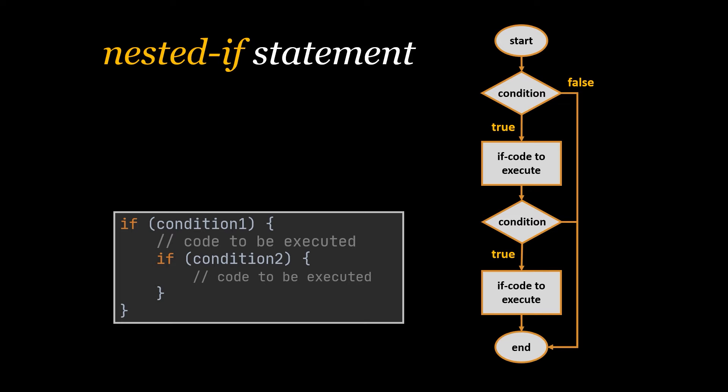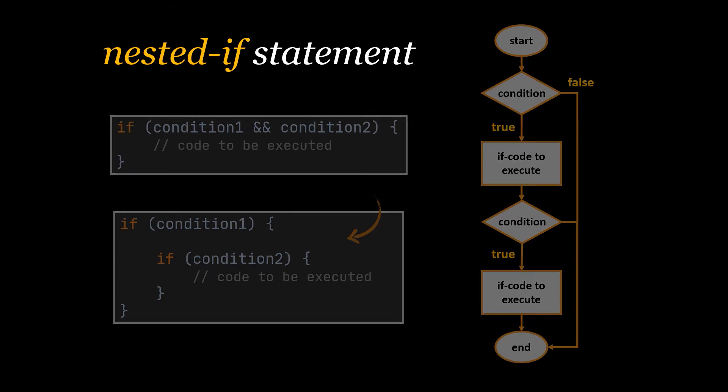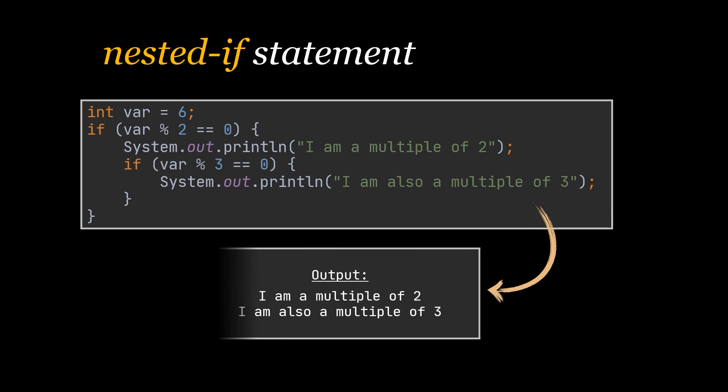Now if no code execution is required between the two if statements, then the nested if statements can be reduced to a single one with the AND operator separating both conditions. As you can see in front of you, in this Java example, if the given variable is a multiple of two we print out I am a multiple of two.